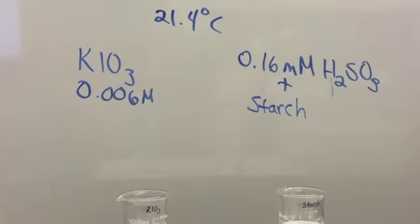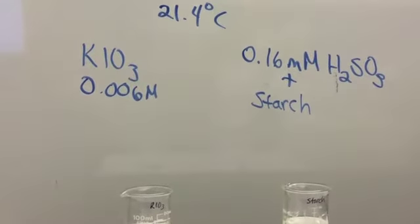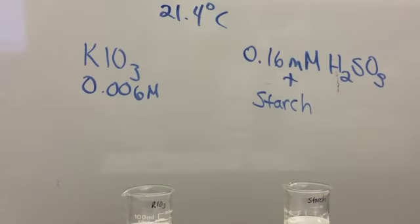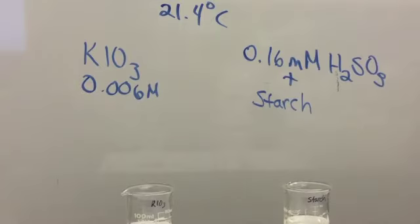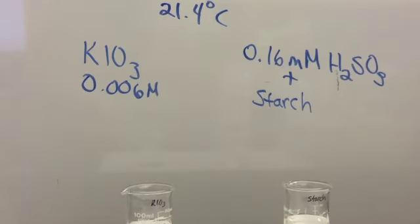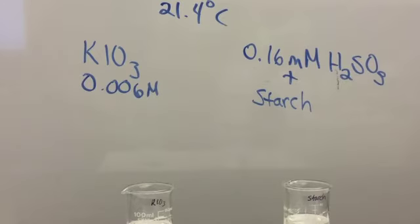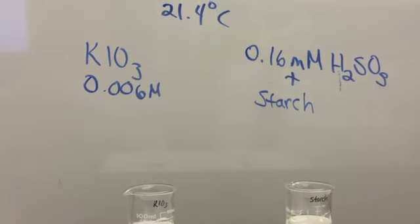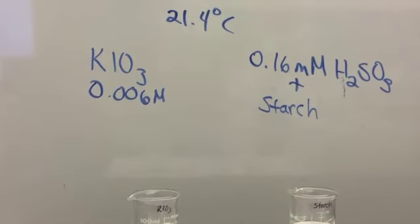This is going to be our baseline reaction. We're going to look at this reaction under different conditions, including different temperatures and different concentrations. We're starting with a 0.006 molar potassium iodate solution and a 0.16 millimolar sulfurous acid solution in starch. The millimolar means that this is actually 0.00016 molar sulfurous acid. The temperature is 21.4 degrees Celsius.